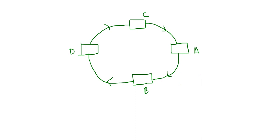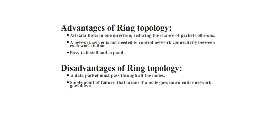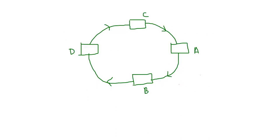Third advantage: ring topology is easy to install and expand. Each workstation connects to just two other workstations, making installation very simple. If you want to expand — for example, add workstation E — you simply add the new node into the ring. It is very easy to expand.